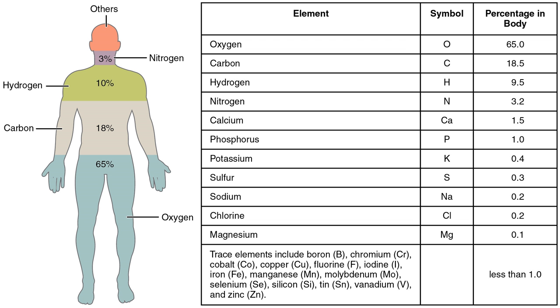All 11 are necessary for life. The remaining elements are trace elements, of which more than a dozen are thought to be necessary for life. All of the mass of the trace elements put together do not add up to the body mass of magnesium, the least common of the 11 non-trace elements.